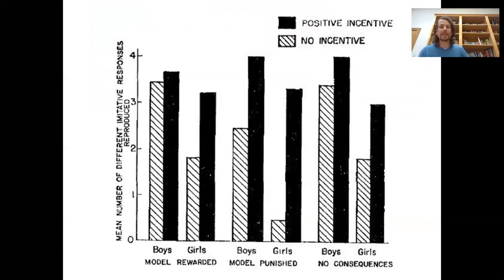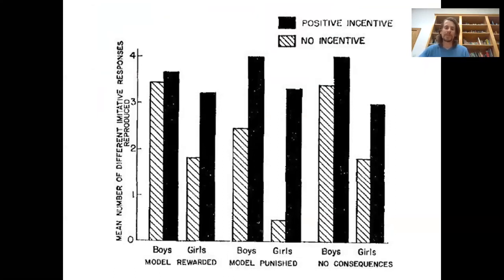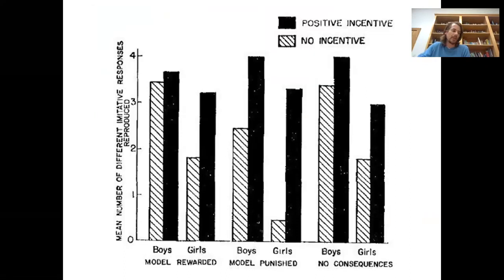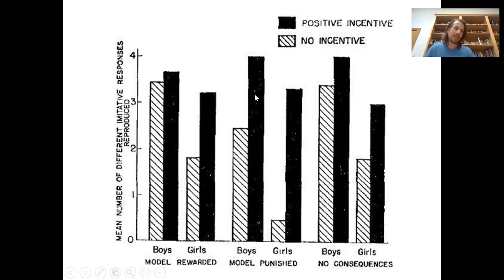We could say the same thing about the kids in Bandura's Bobo Doll research who saw the model being punished for beating up Bobo. Those kids were learning those aggressive behaviors — acquiring them, adding them to their own behavioral potential — but that learning remained hidden, remained latent, until Bandura gave the kids a reason to show him what they had learned by offering an incentive like stickers.